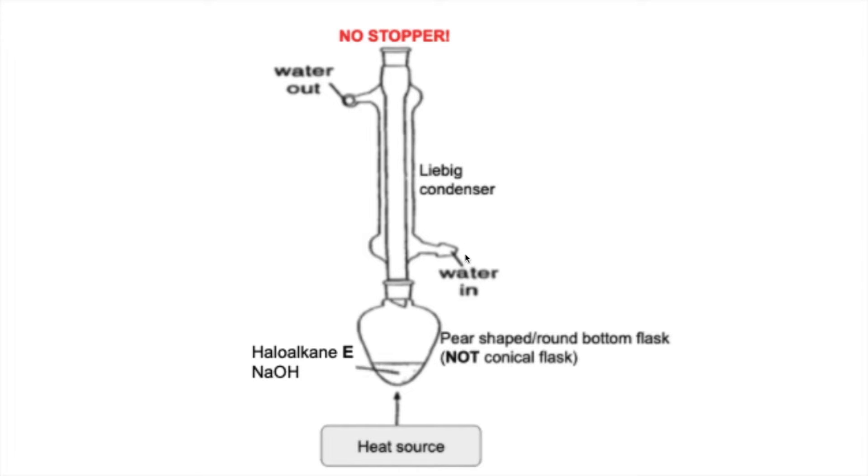And the other thing they're going to be looking for is the flow of the water. So water always flows in at the bottom of a condenser, travels around the outside jacket, glass jacket, and it goes out at the top. And we don't want a stopper in either.